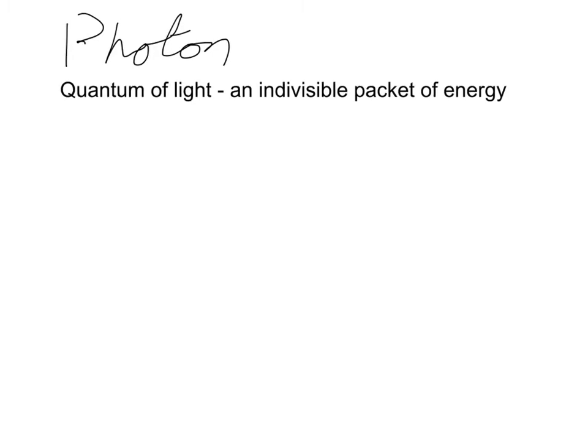A photon is a quantum of light — it's the smallest unit of light that you can have. If you imagine a beam of light, it's actually made up of billions upon billions of tiny photons, and each one of these photons is the smallest indivisible packet of light you can get. You can't split it in half and have two photons instead — it's a unified whole.